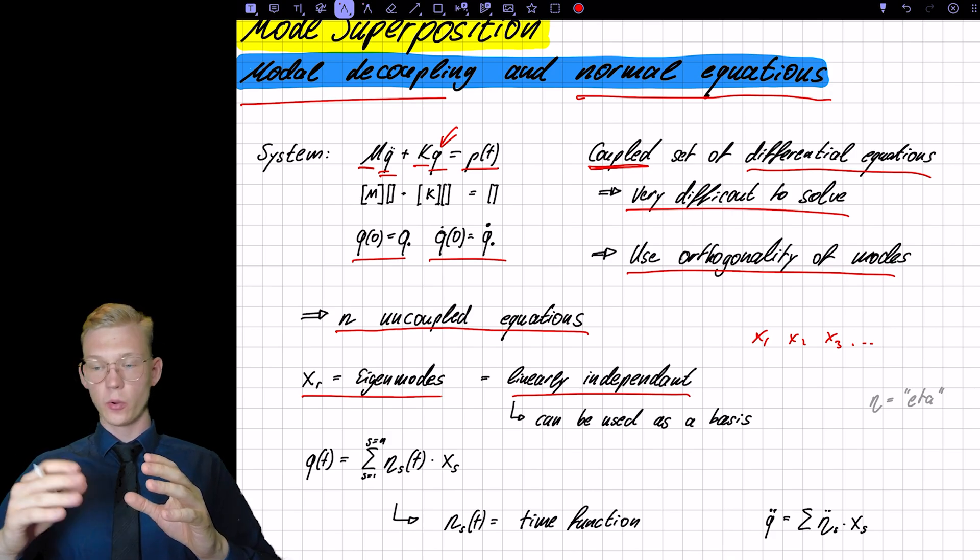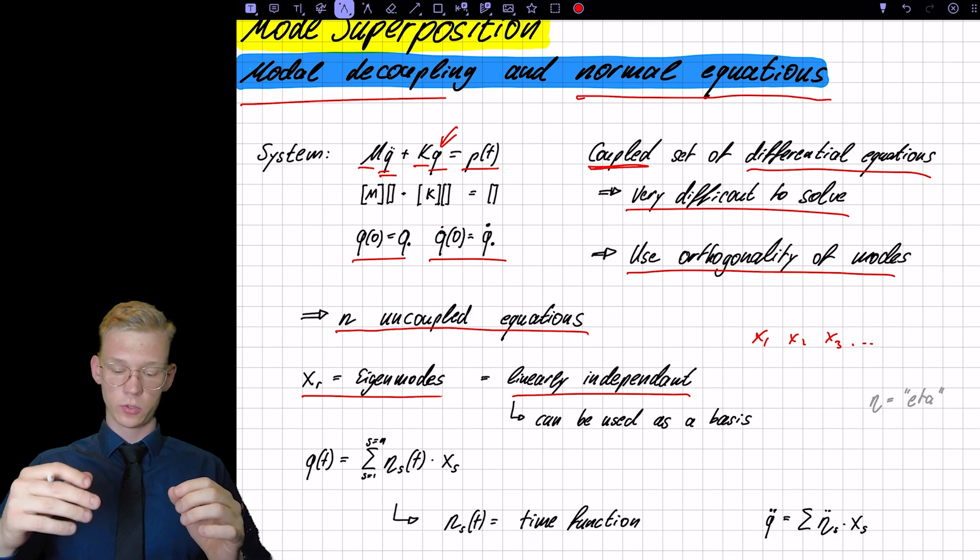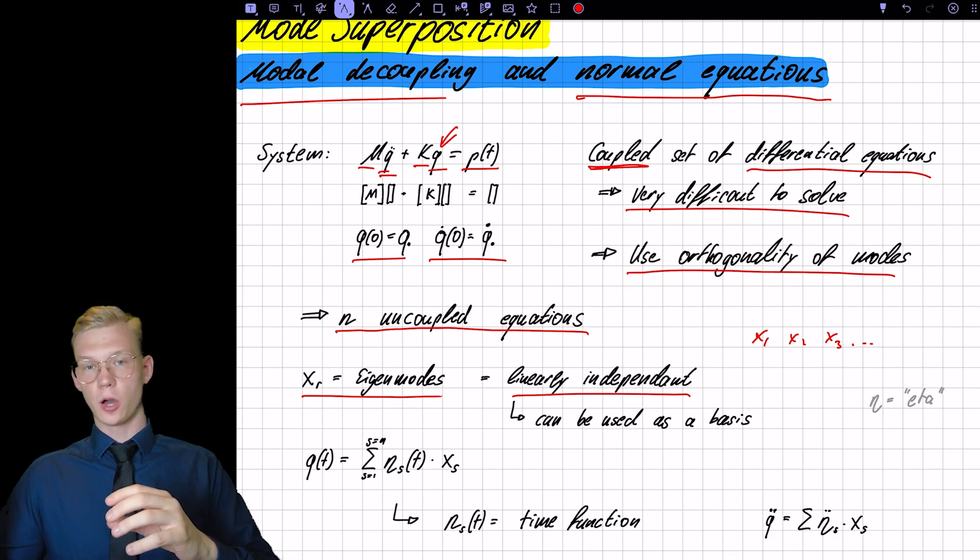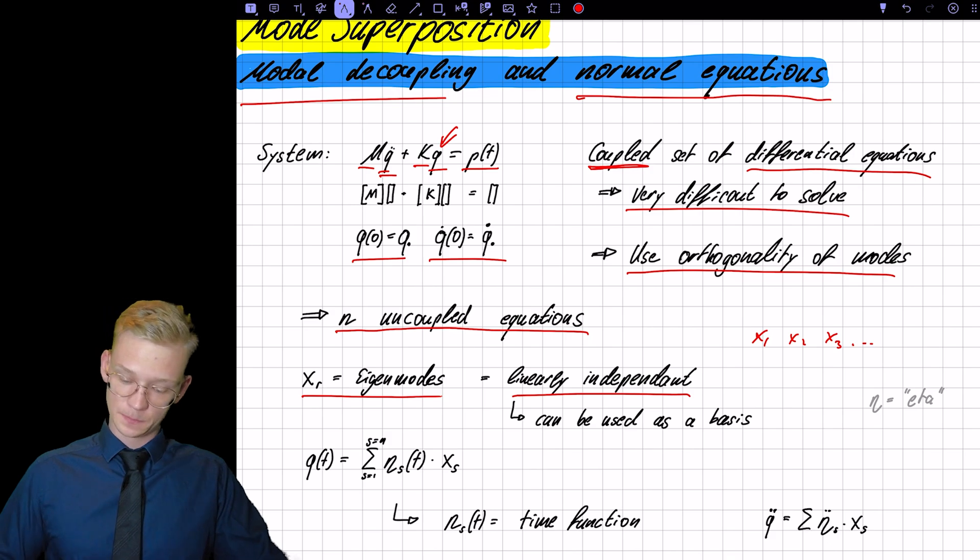We cannot multiply one eigenmode with a constant to get another eigenmode. So they can be used as a basis.